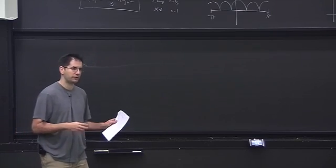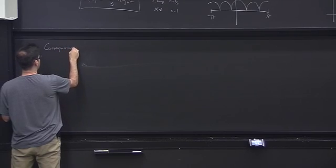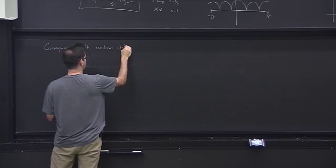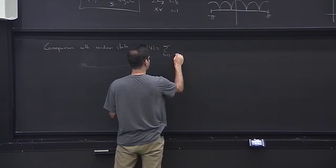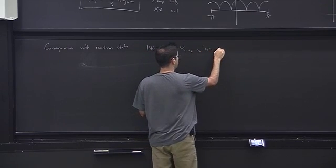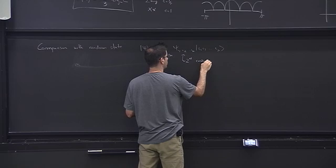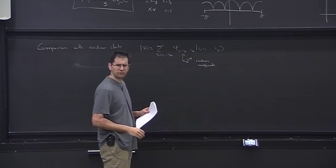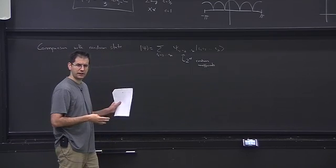Perhaps the more important observation for next week is to compare with what happens for a random state — a state where we pick 2^N random coefficients. Comparing the scaling of entanglement with a random state was an optional problem in the tutorial two days ago.